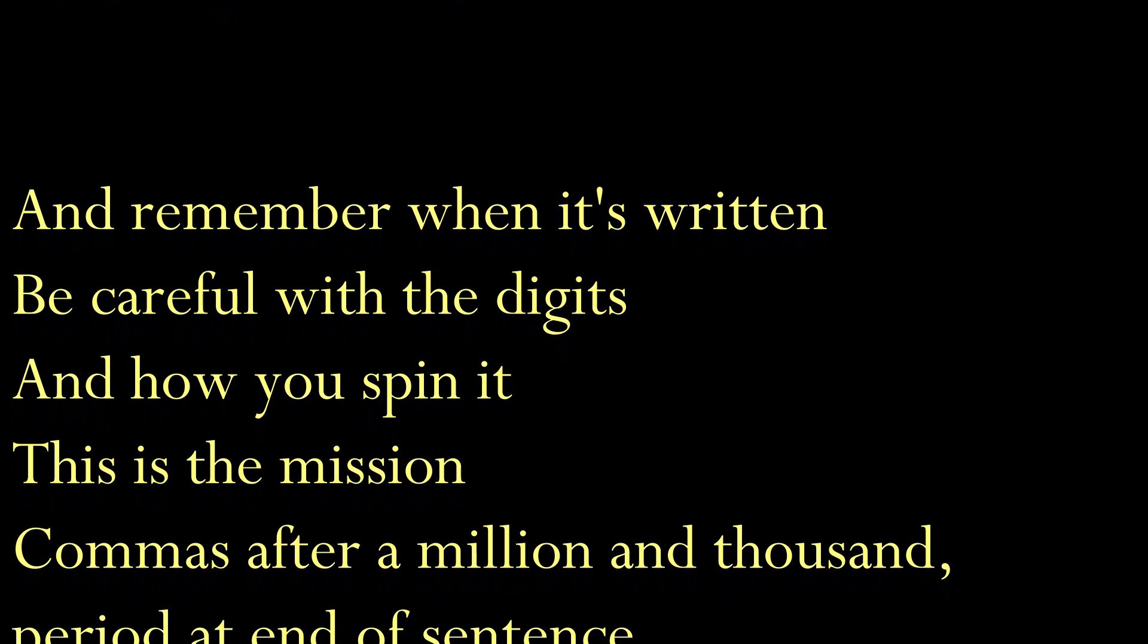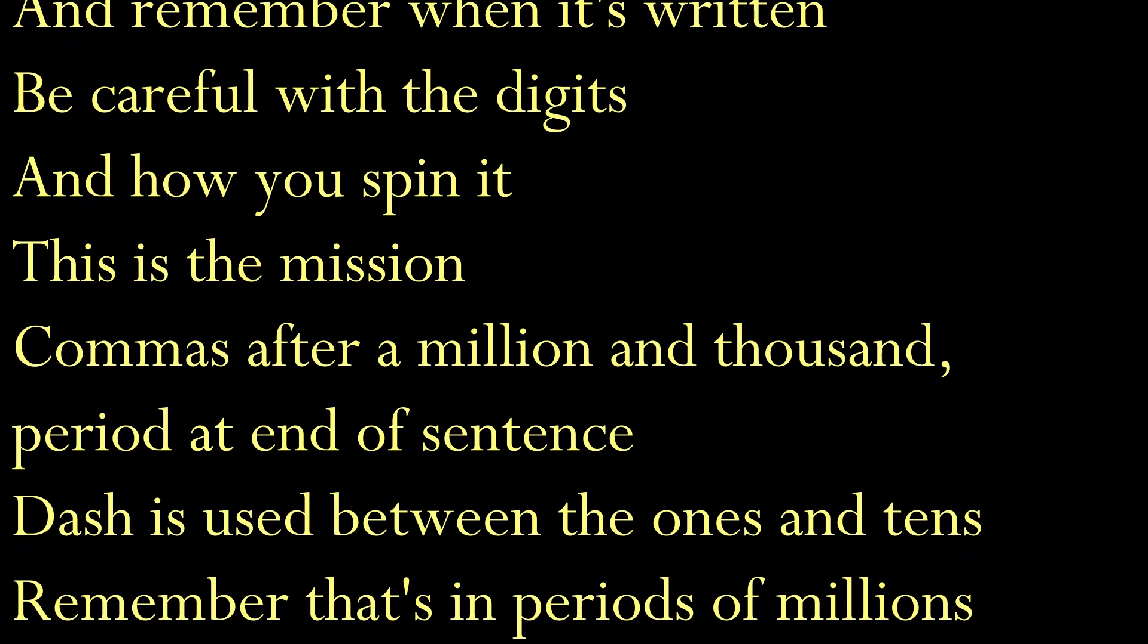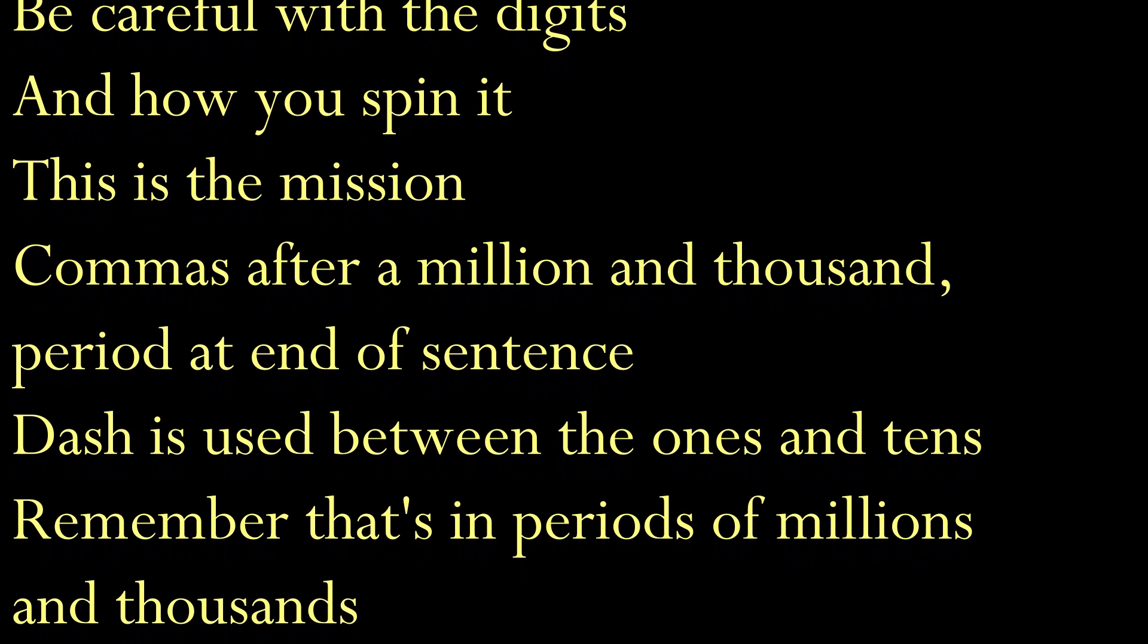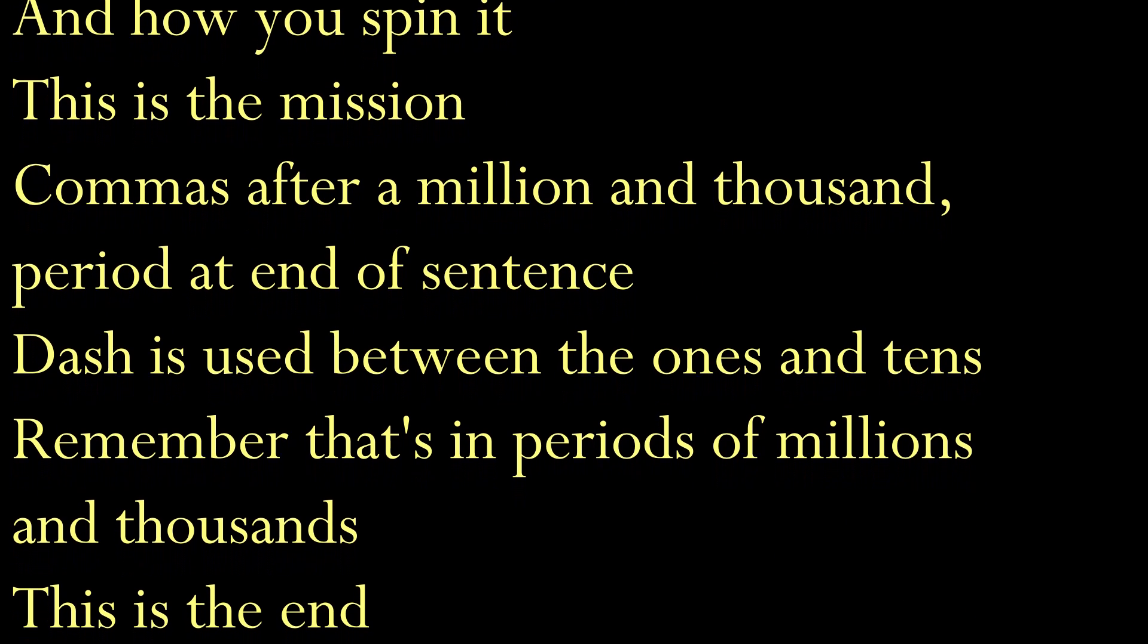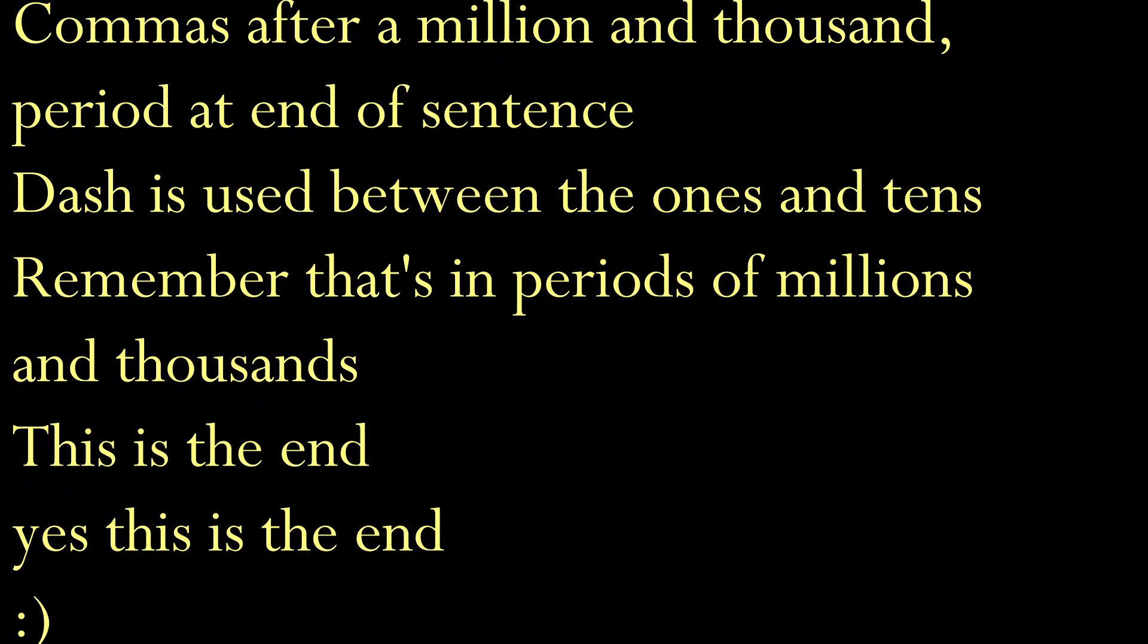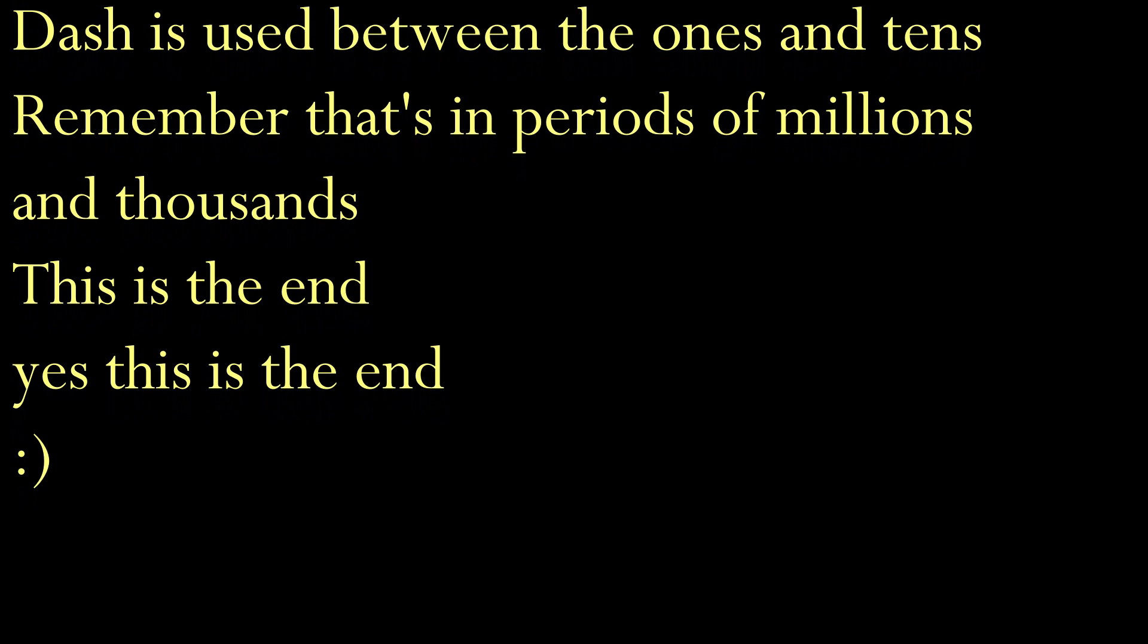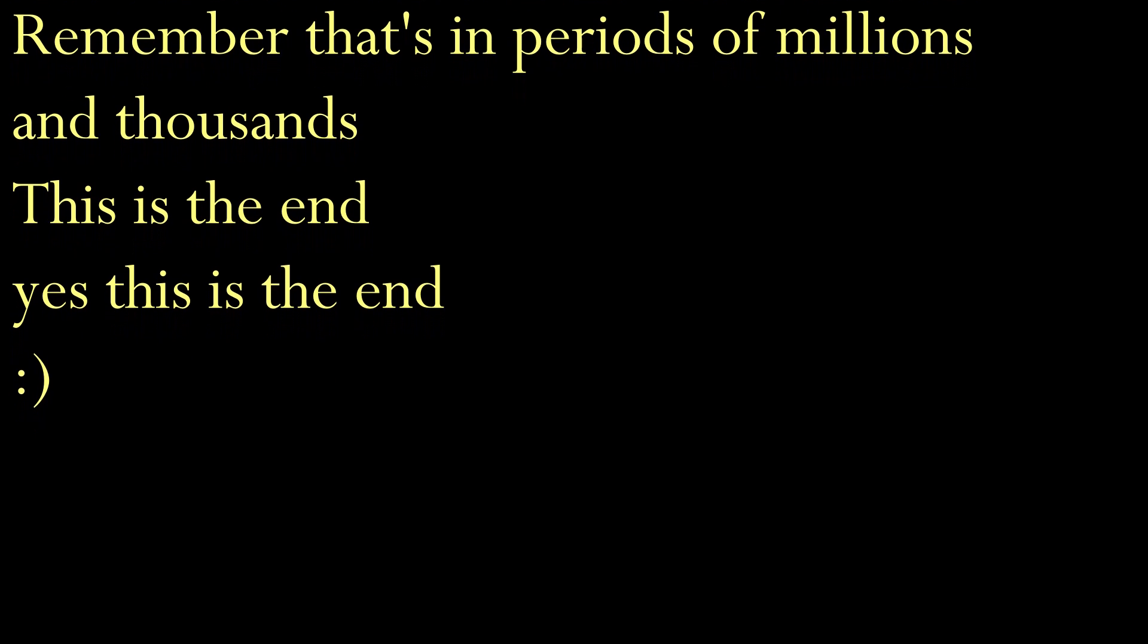Remember when it's written, careful with the digits and how you spin it. This is the mission. Commas up to million and a thousand. Period at the end of the sentence, dash is used between the ones and tens. Remember that's in periods of millions and thousands. This is the end. Yes, this is the end.